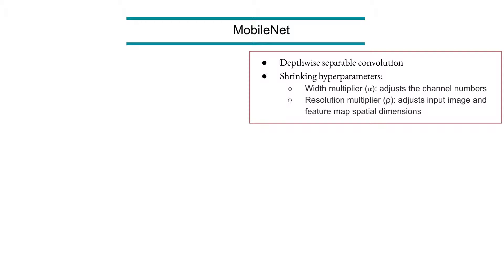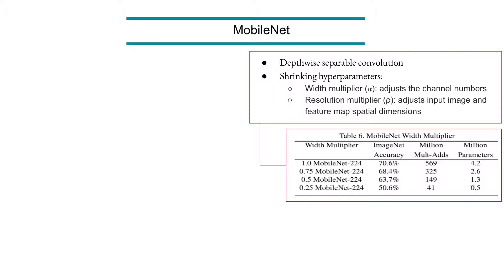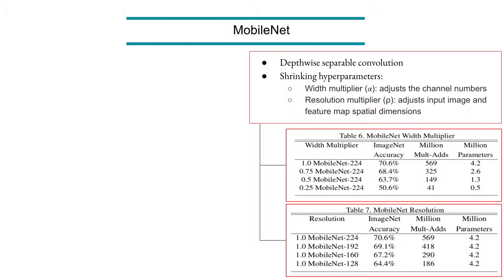The second parameter is the resolution multiplier, which controls the input image or intermediate feature map spatial resolution. Looking at the results for different parameter settings: the left numbers define the width multiplier alpha — a value of 1 keeps the number of channels the same, while smaller values decrease channels gradually. The second numbers are about input image resolution, and the best performing configuration is the one with higher resolution input images.